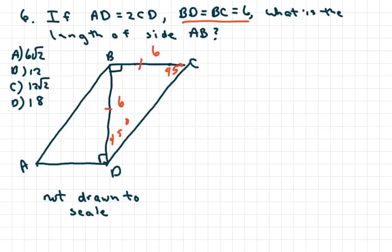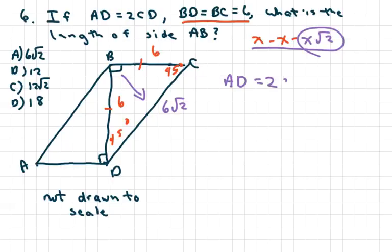So what we want to do is know that if this is x, remember on an isosceles right triangle it's x, x, x√2. So the side across from here is just going to be 6√2. The side across from the 90, that's the hypotenuse, that part right there. So we also know that AD equals 2CD. So AD equals 2 times 6√2, which is 12√2.